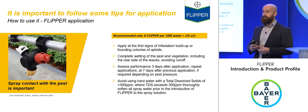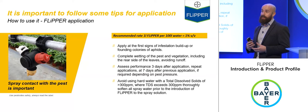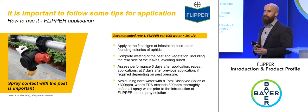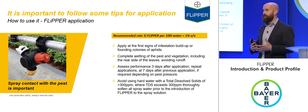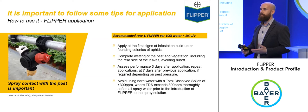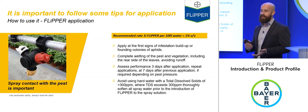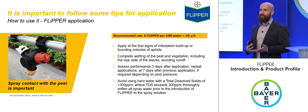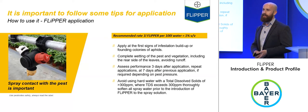Apply Flipper at the first signs of infestation and build-up — don't let the pest get ahead of you. Get the water volume right so you achieve contact with the pest and leaf without run-off. Assess performance two to three days after the first application, and if live insects are still visible, a second application is advisable.